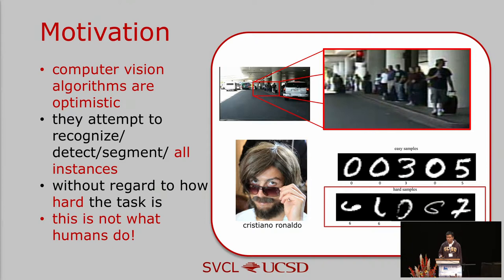Almost all recent computer vision and machine learning algorithms are optimistic. For example, they try to recognize, detect, or segment all instances without regard to how hard the task is — like trying to detect a person in a very low resolution scene, identify a disguised person, or recognize unusual objects.